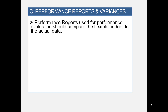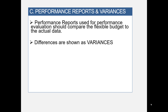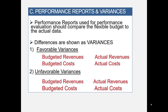Performance reports are generally prepared and they compare flexible budget information to actual data. Any differences in these two amounts will be shown as variances. Variances can be favorable or unfavorable. For revenues, if budgeted revenues are less than actual revenues, it's favorable. If budgeted costs are greater than actual costs, it's also favorable.